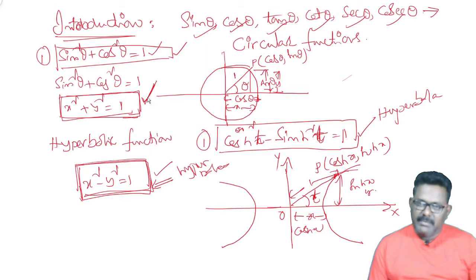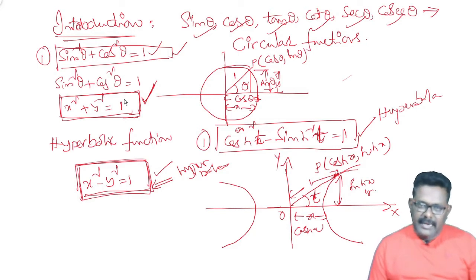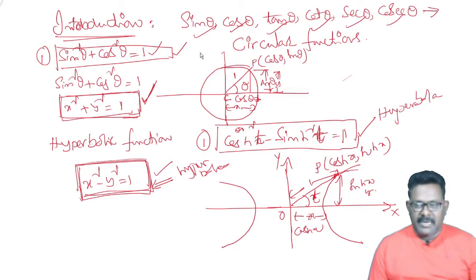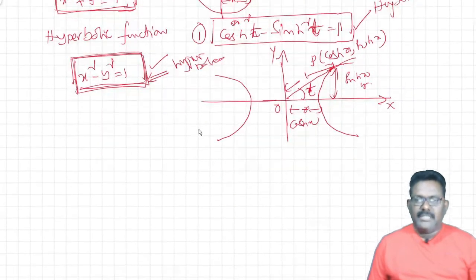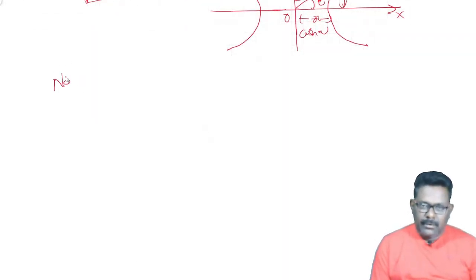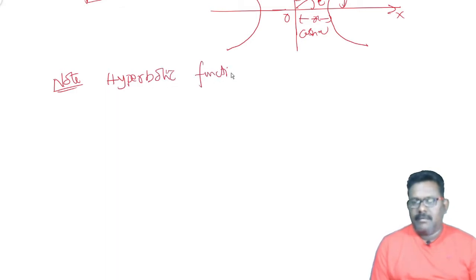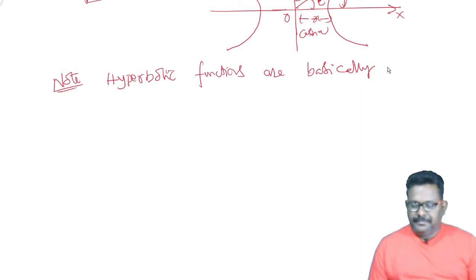The difference and relation between circular functions and hyperbolic functions: hyperbolic functions are basically exponential functions. Exponential functions involve power series, and this is the concept from algebra which we will discuss.